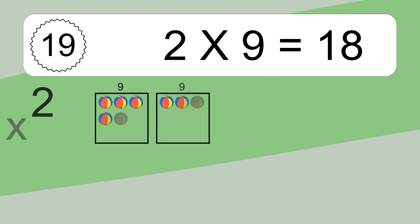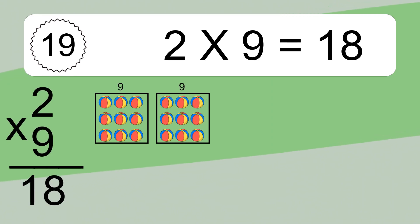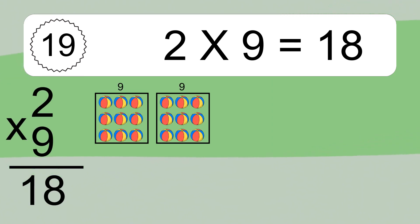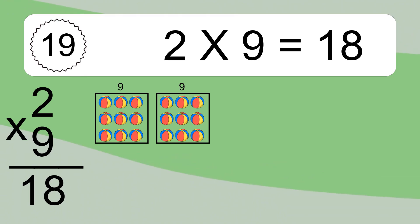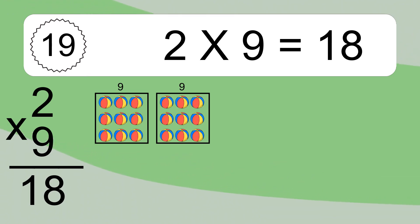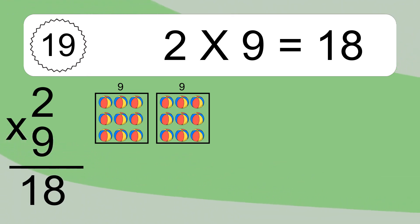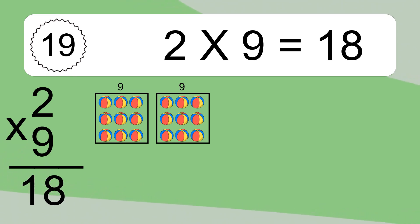2 times 9 equals what? 2 times 9 equals 18. We have 2 boxes and each box has 9 colorful balls inside. If you count all the balls in all the boxes together, you will have 2 times 9 balls. This equals 18 balls.